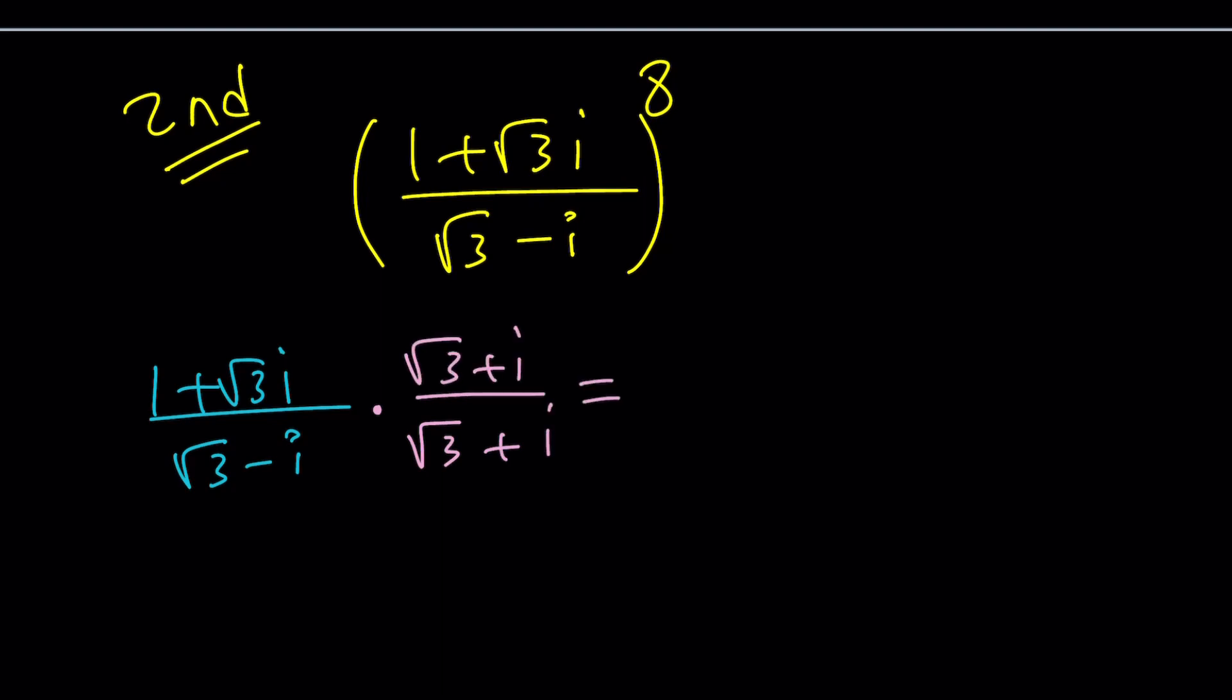√3 + i and √3 + i. In the numerator, we're going to distribute: 1 times √3 + i plus √3i times √3 is just going to be plus 3i. And finally, when you multiply √3i by i, you're going to get √3i² or just -√3, since i² = -1.